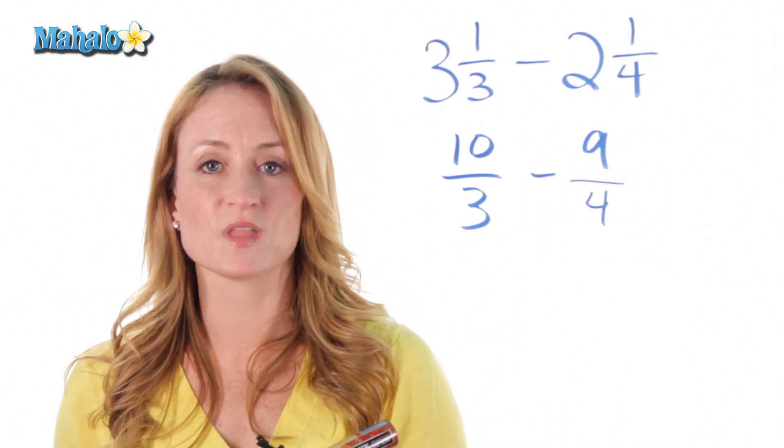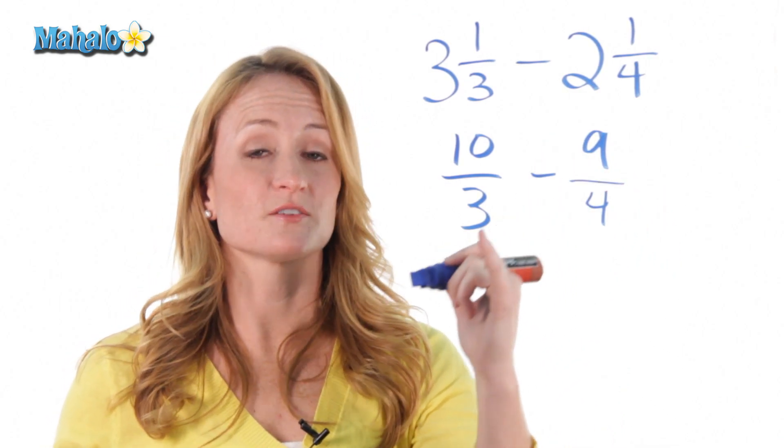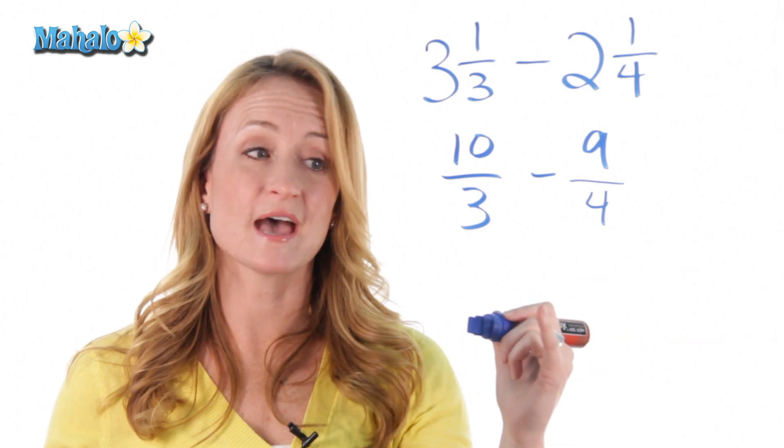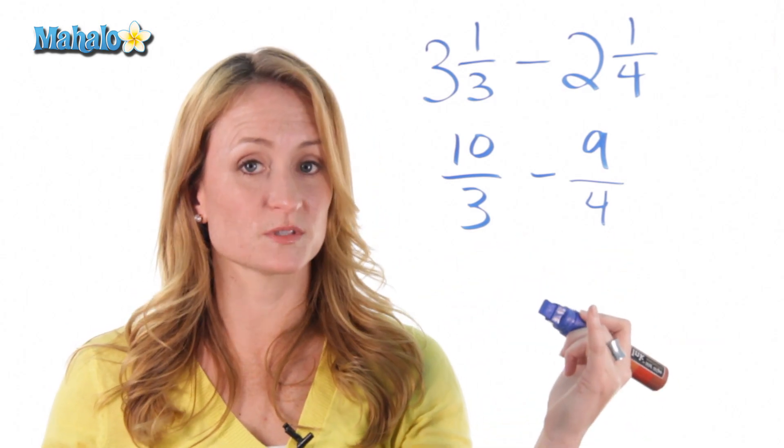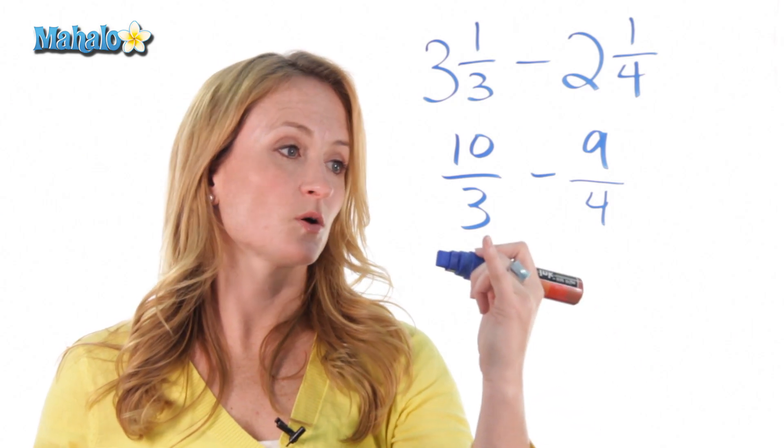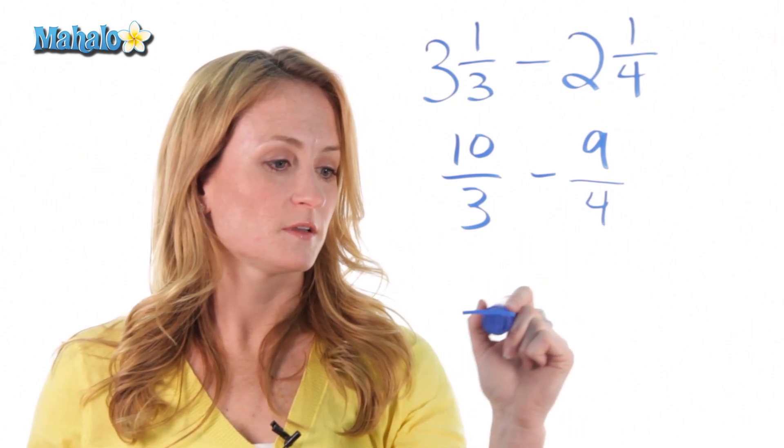Bring down our subtraction sign. We also know that the rules of adding or subtracting fractions is you have to have the exact same denominator. These aren't the exact same, so we need to get what's called a common denominator. So, how do they become common? If they were 12.